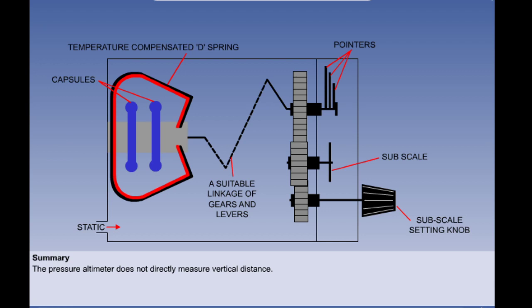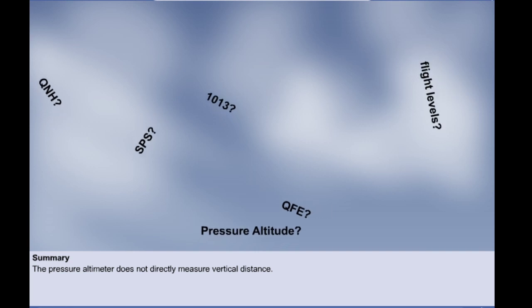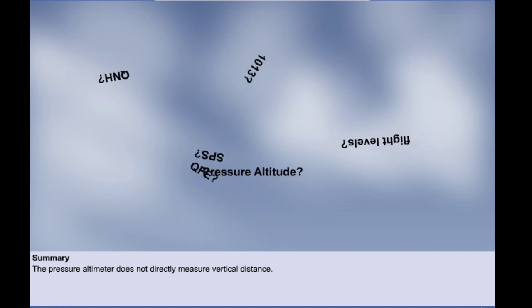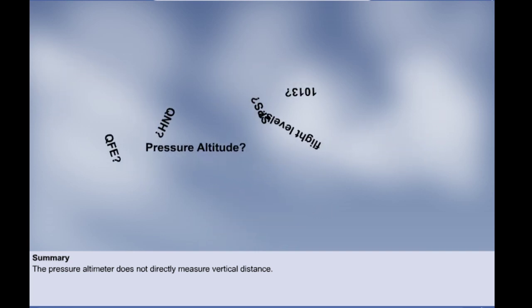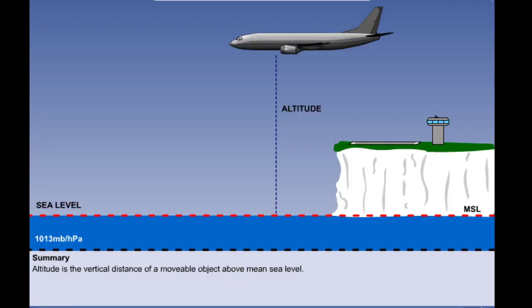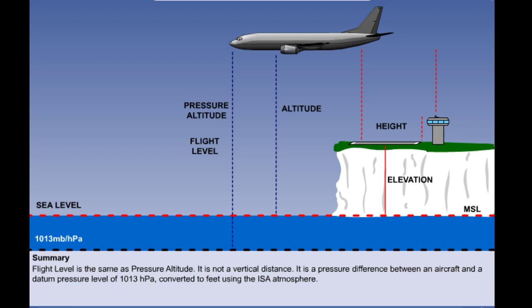Let's summarise this lesson. We said that we were going to remind ourselves of the basic principle behind the pressure altimeter and to appreciate its limitations as a measure of vertical distance. We would also look at altimeter settings and the reasons for using one rather than another. We defined altitude, elevation, height, and flight level or pressure altitude.